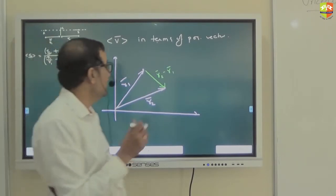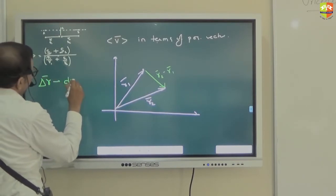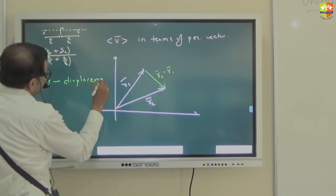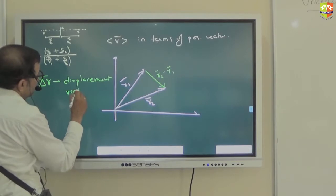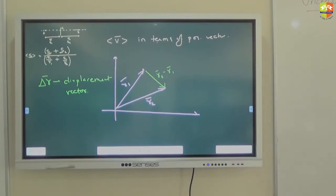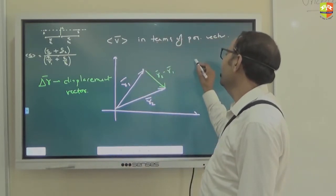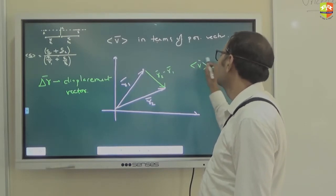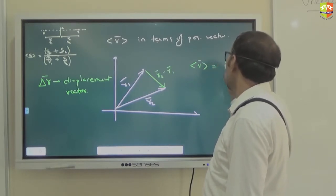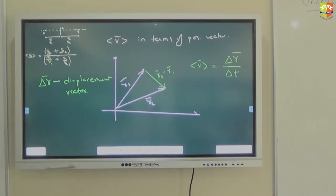Please write down. Delta R can be the displacement vector. Now, suppose I want to write the average velocity — what should it equal? Displacement is delta R divided by delta t. Delta R divided by delta t is your average velocity.